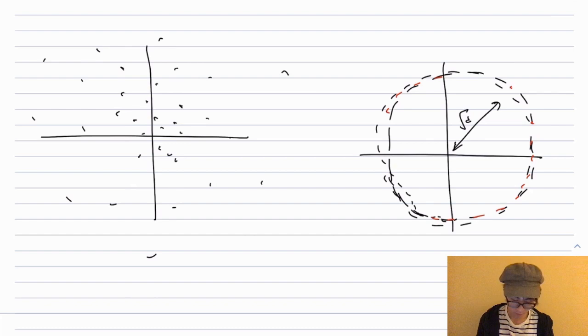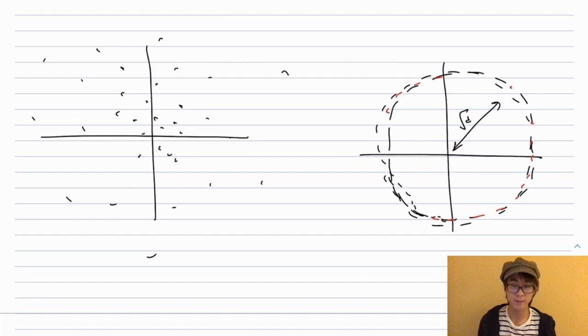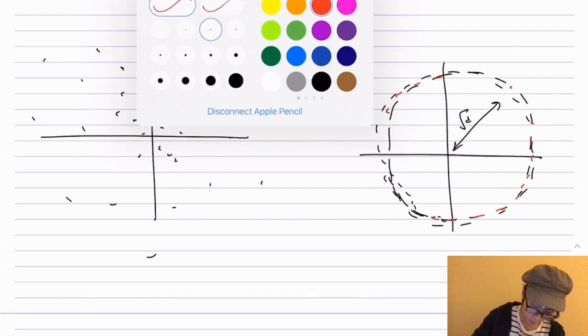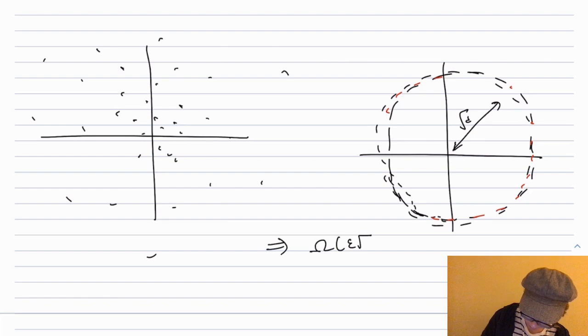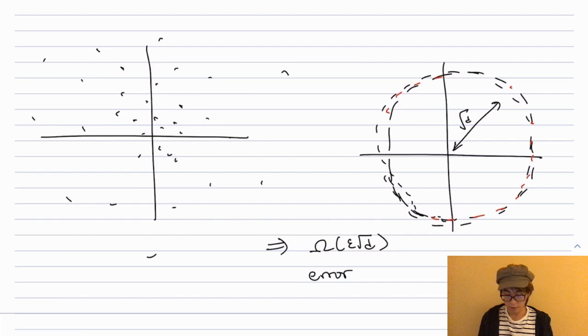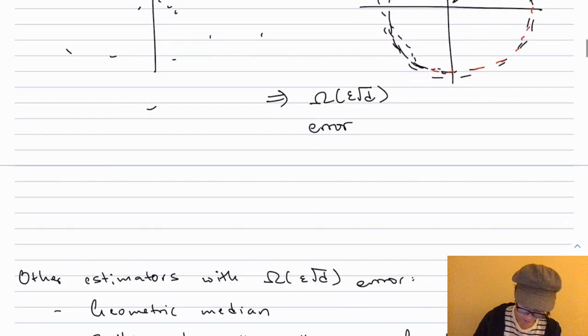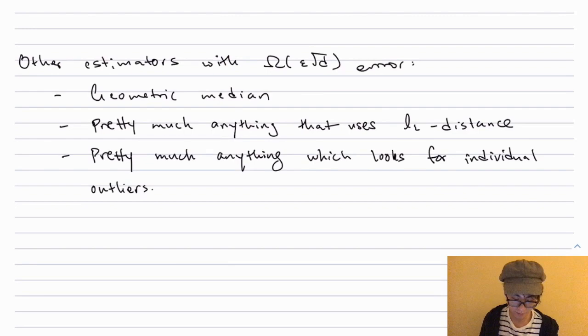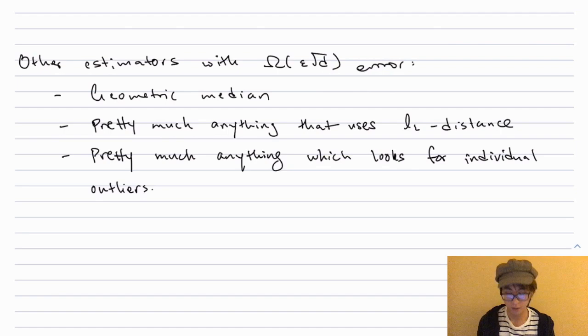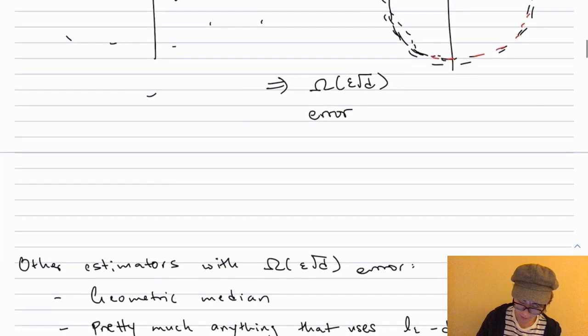In the low-dimensional setting, an epsilon fraction of bad points each contributed at most a logarithmic factor, so they couldn't screw up the empirical mean by much. But in high dimensions we have an epsilon fraction of points each √d away from the mean, and when you work it out you get an error which is Ω(√d)—the same loss as before. This should convince you that a bunch of estimators don't work: other things that don't work include geometric median. More generally, pretty much anything that uses L2 distance or looks for outliers on an individual basis won't be able to get past the √d error, because each individual bad point looks just fine. It's the aggregate behavior that causes the ε√d error.